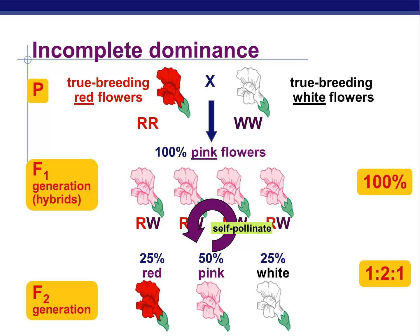One thing about incomplete dominance is you can always tell the genotype from the phenotype, because the heterozygote has a different phenotype. So our heterozygous ones are pink. You can see that we have one RR that's red, two RW's — 50% — that are pink, and one WW that's white.